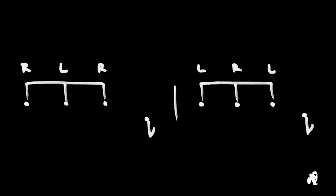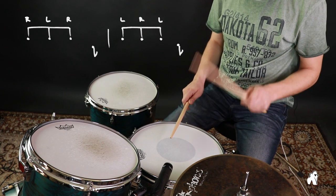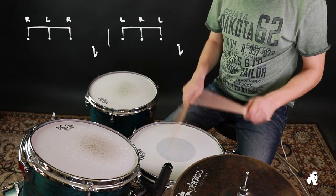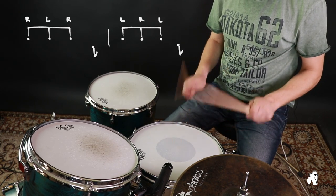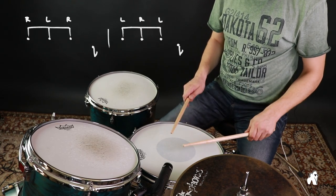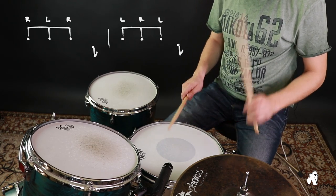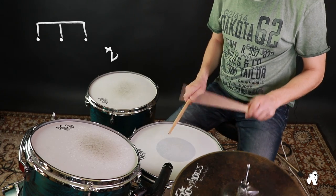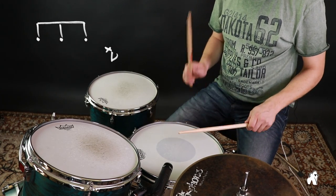We start in the simplest way with just a snare, a kick and a hi-hat. In the beginning, we want to make sure that all the hits are pulled up to the same height. Experiment with different dynamic levels at medium speeds until you get the hang of it. Play with either right foot or left foot against the snare.